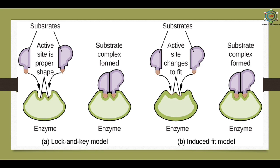Comparing the two models: the lock and key model explains the binding of a perfectly matching substrate and enzyme for a reaction, while the induced fit explains the mechanism of enzyme-substrate binding when they are not complementary in shape. In the lock and key model, binding is very strong and the active site is static, while in induced fit, binding is flexible and the active site is not static. In many aspects, the induced fit model is considered a better theory than the lock and key model.